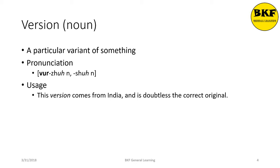Version is a noun. It's a particular variant of something. There are multiple pronunciations to this. Here's the usage: 'This version comes from India and is doubtless the correct original.'